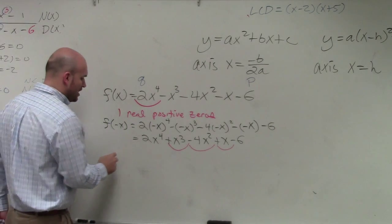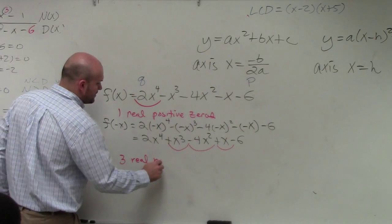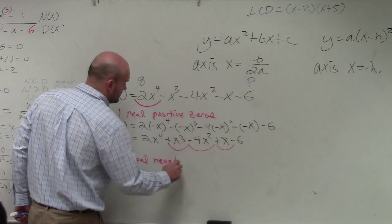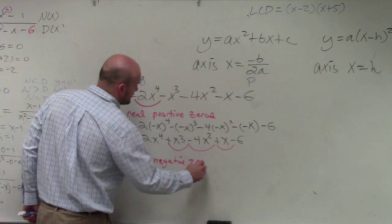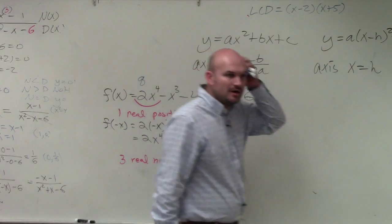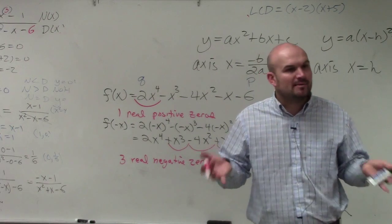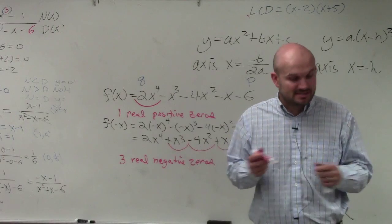So there are, since there's three sign changes, that means there's three real negative zeros. It doesn't tell you what the zeros are. It just tells you how many there are. But why is this important? Because now we can determine how many complex, if there are complex or not.